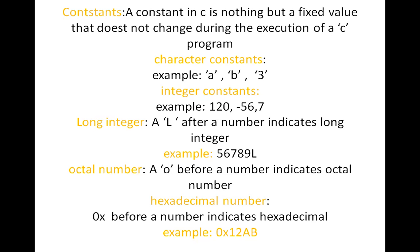Integer constants — examples: 120, -5, 6, 7 — these are all integer constants. For long integers, placing an 'L' after a number indicates a long integer, which means it can hold more values. For octal numbers, a '0' before a number indicates an octal number — for example, 0123 is an octal number. For hexadecimal, '0x' before a number indicates hexadecimal — for example, 0x12AB is a hexadecimal number.